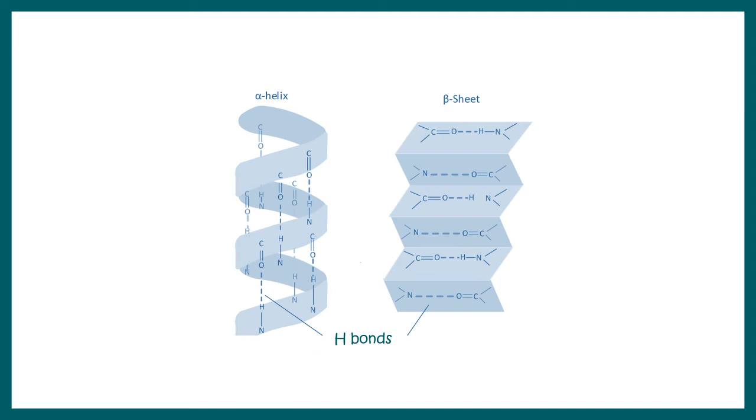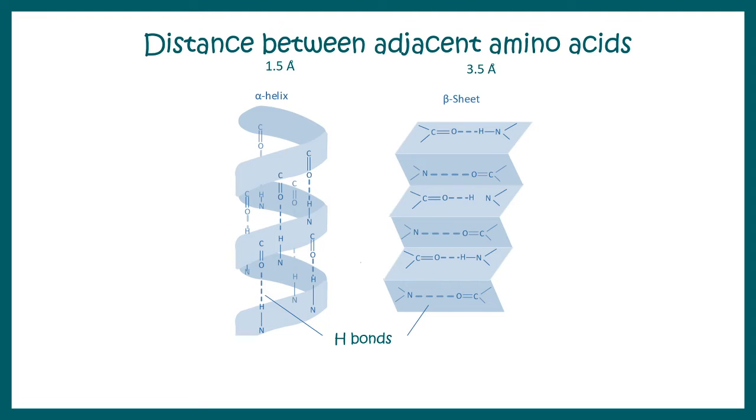The biggest difference between alpha helices and beta pleated sheet is the distance between adjacent amino acids, which is 1.5 angstrom in alpha helices whereas it is 3.5 angstrom in beta pleated sheet. In terms of steric hindrance, beta pleated sheet structures experience less steric constraint compared to alpha helices.